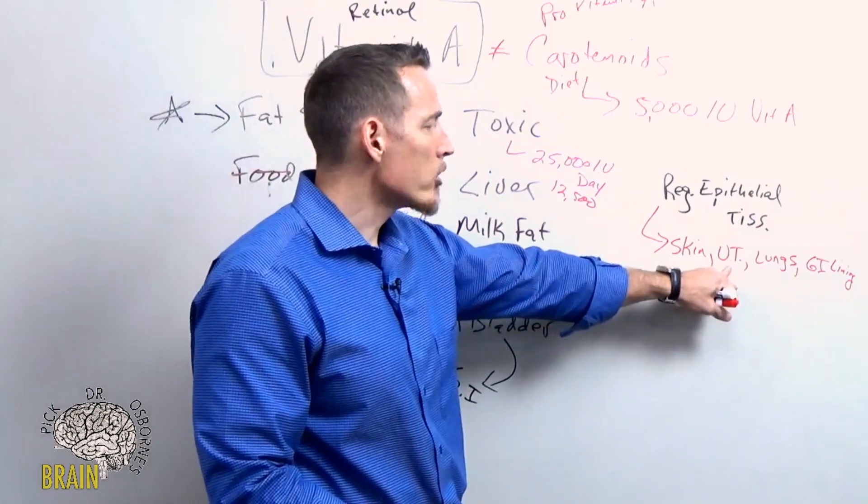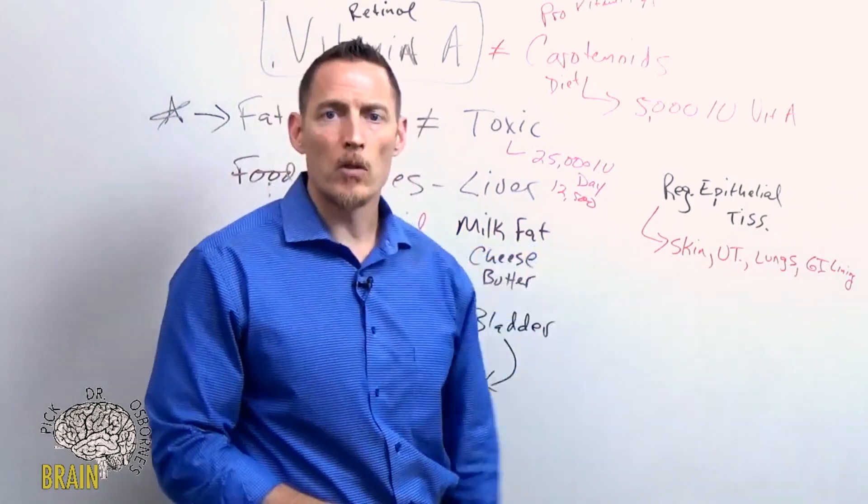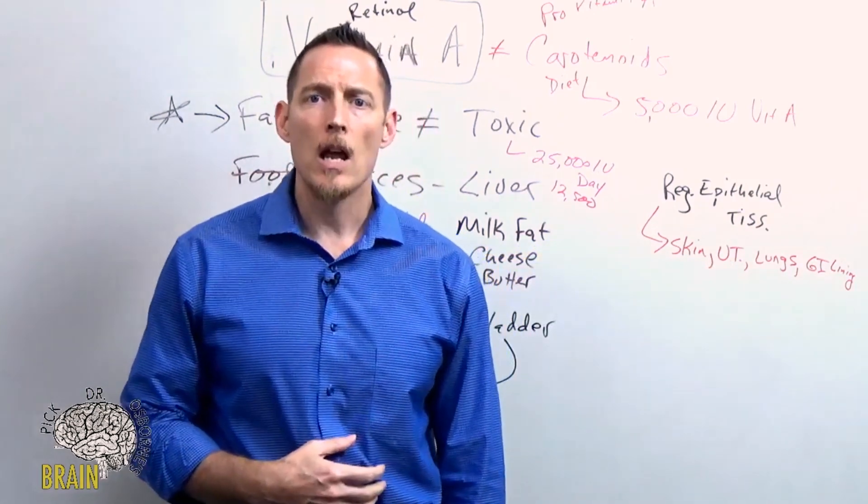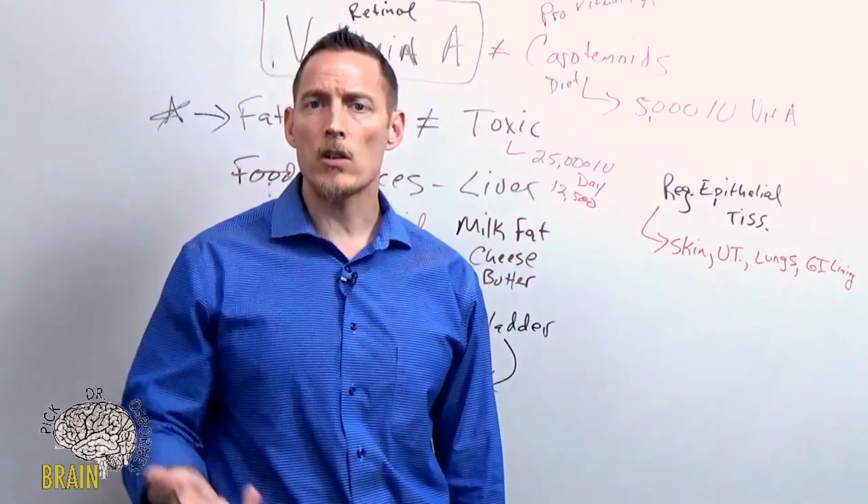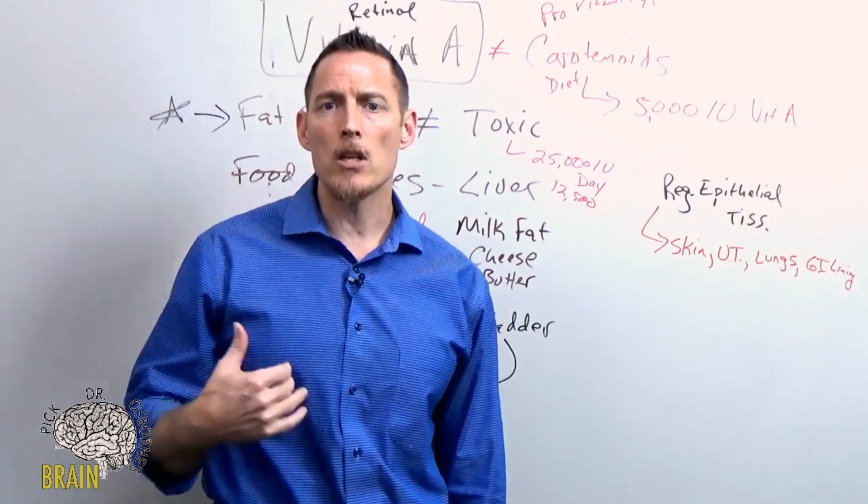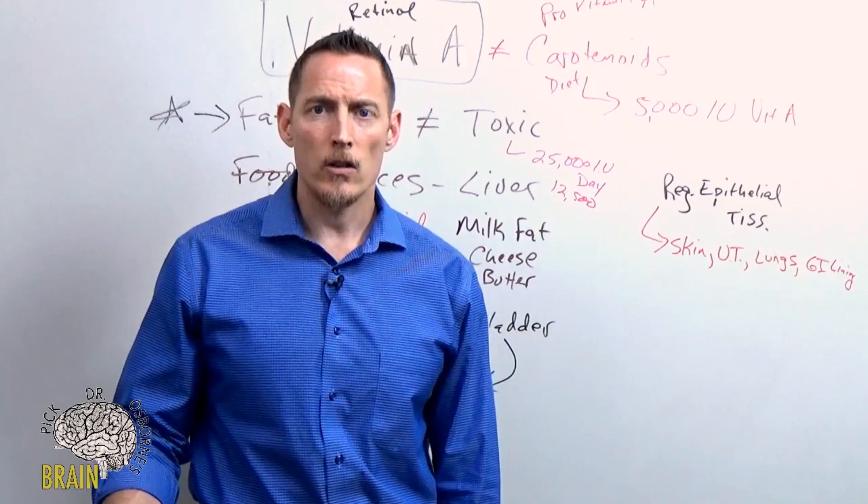Chronic urinary tract infections - if you struggle with repetitive urinary tract infections, if you have kind of mysterious blood coming out every time you give a urine sample and your doctor's like, 'We don't know why it's happening,' that could be a potential sign of vitamin A deficiency.